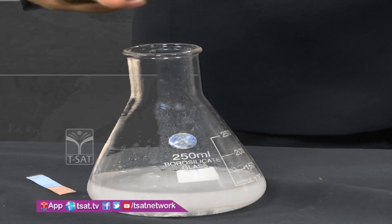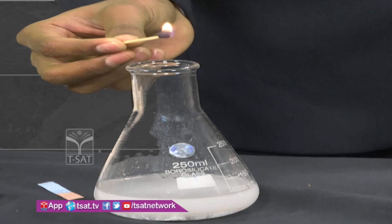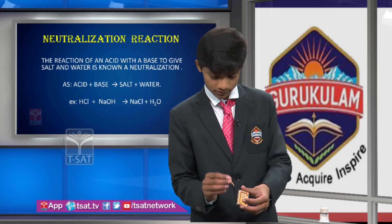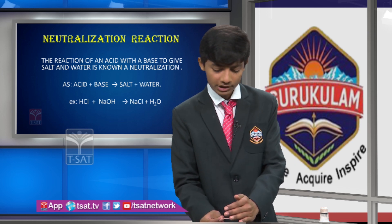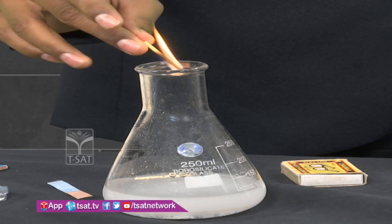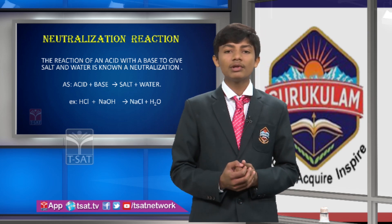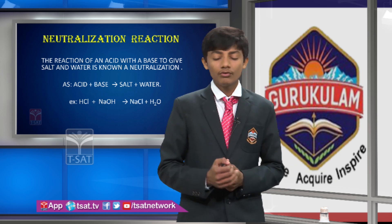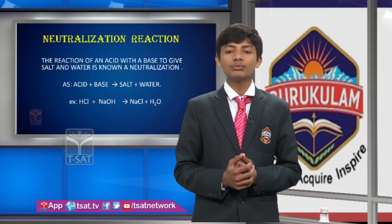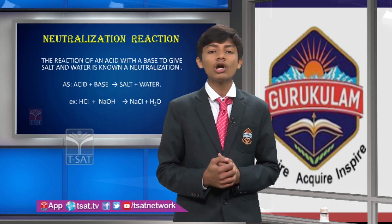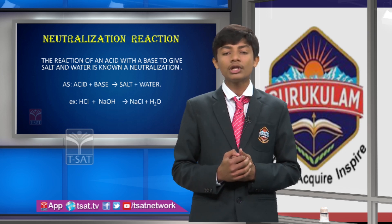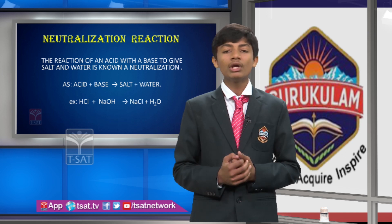When a glowing splint is placed near the test tube as H2 is liberated, it gives a pop sound and goes off automatically. Neutralization is also useful in daily life: in the morning we brush our teeth. In our mouth at night, acids are released; to neutralize them, we use toothpaste, which is a base. When we brush with a base, it neutralizes the acid in our teeth.